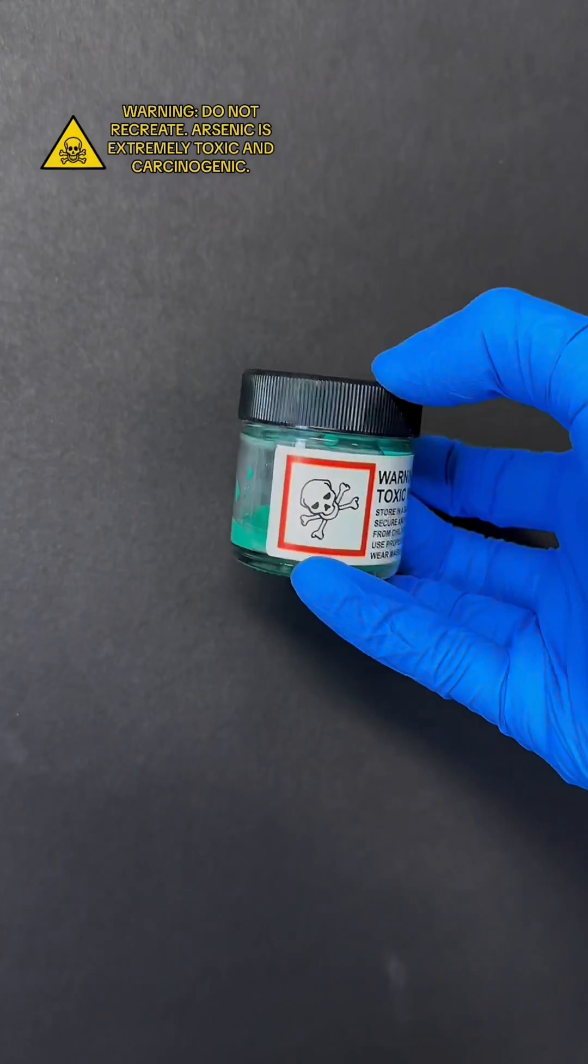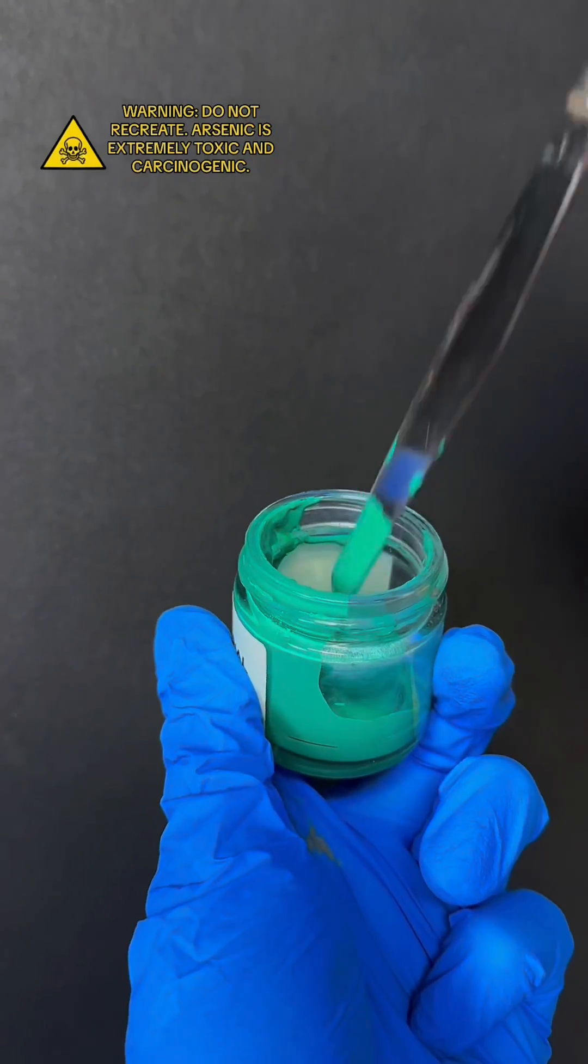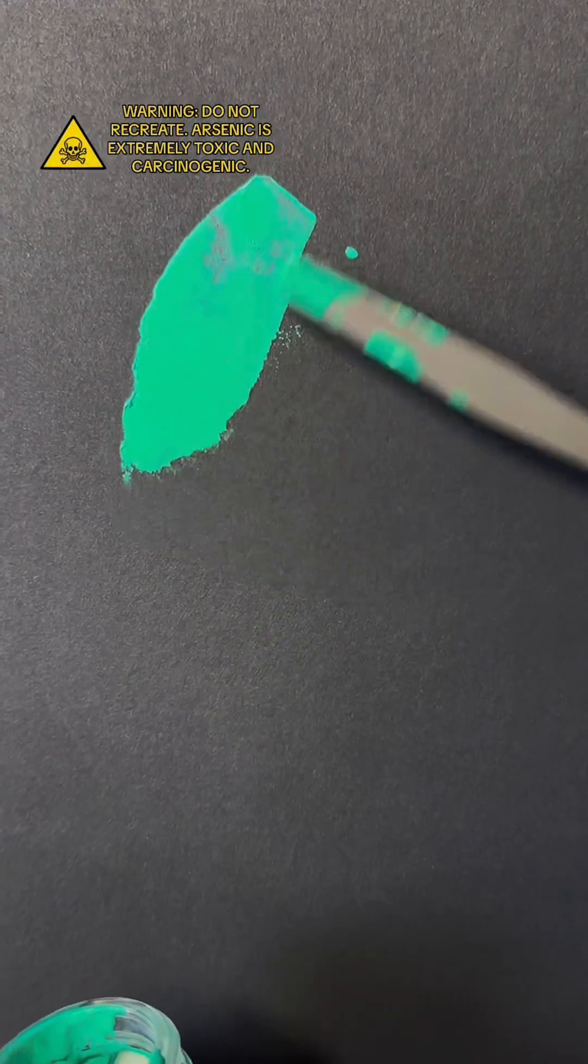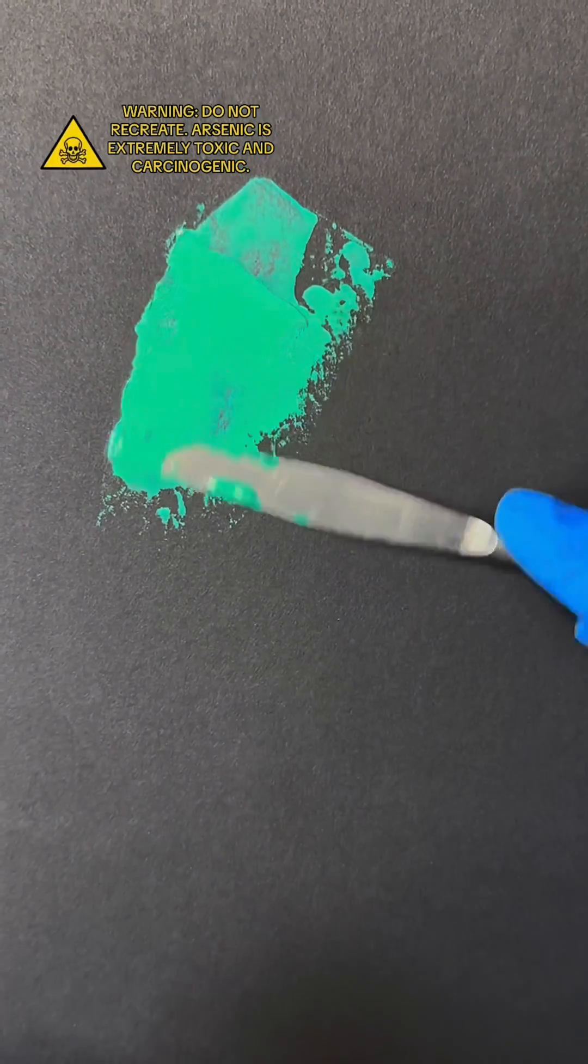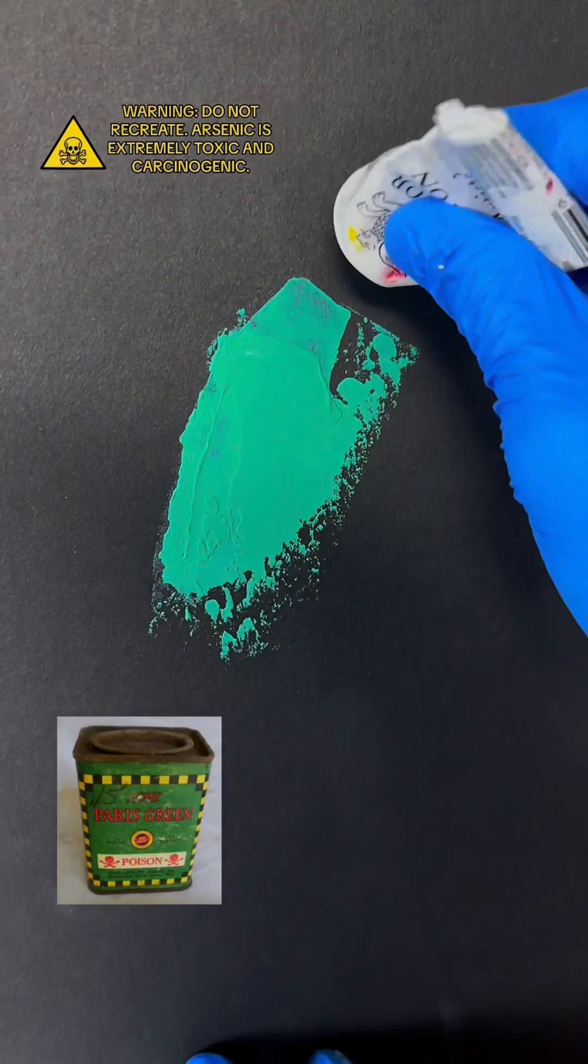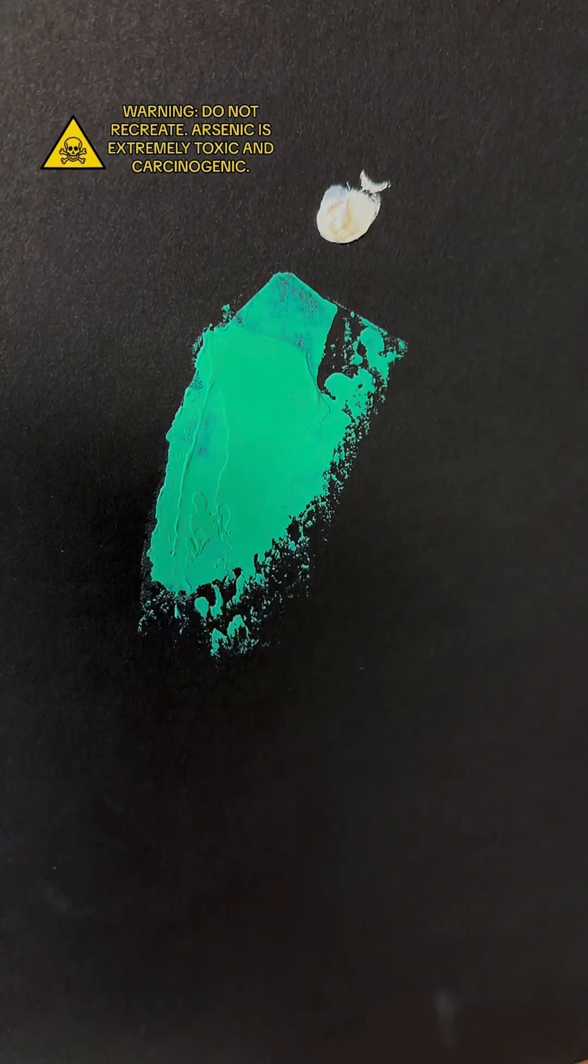Interestingly, even though the use of arsenic greens pretty much stopped at the end of the 19th century and were replaced by things like cobalt green, Paris green actually lingered for a few more decades, being used as an insecticide on potato and apple crops and other things like that.